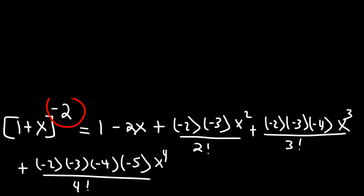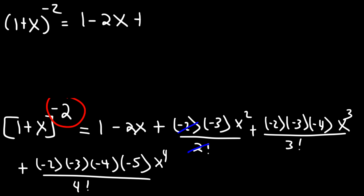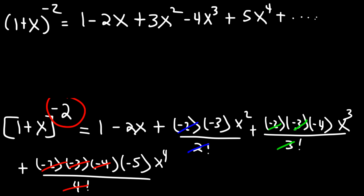Let's simplify the expression. Notice that 2 factorial and 2 can be canceled, so we get positive 3x² for the third term. Now 3 factorial is 6, and we can cancel with the 2 and 3 above, leaving negative 4x³. And 4 factorial is 4×3×2×1, leaving us with positive 5x⁴. Then the pattern repeats.